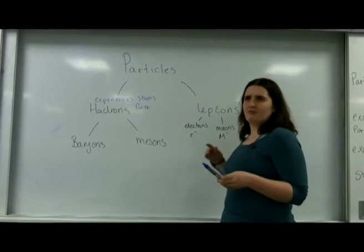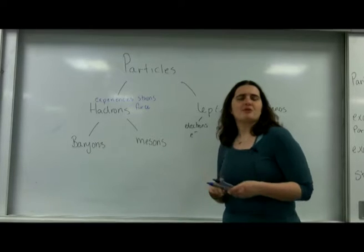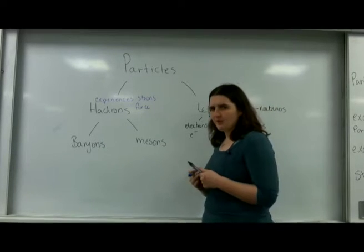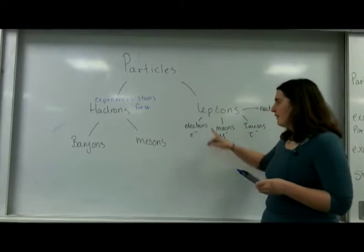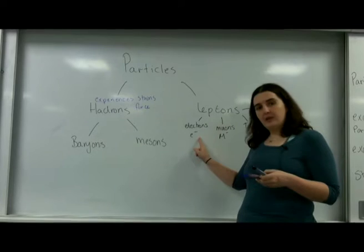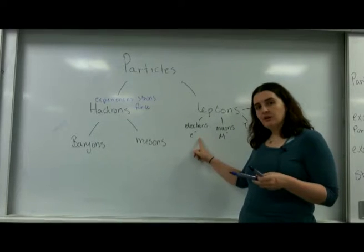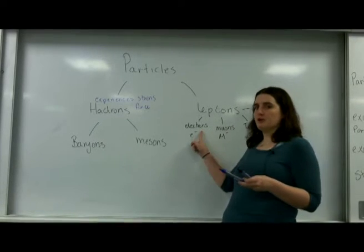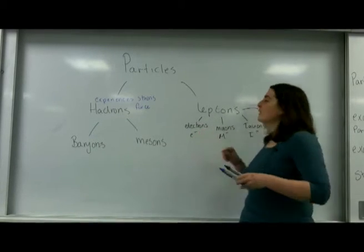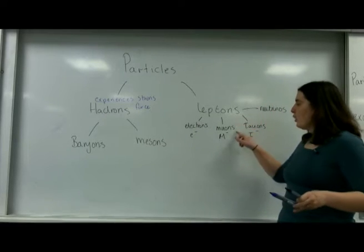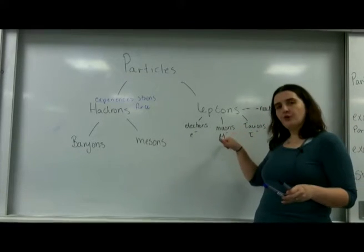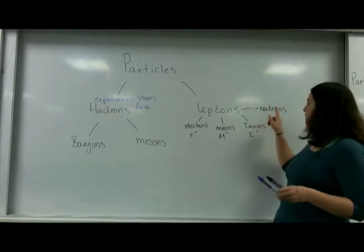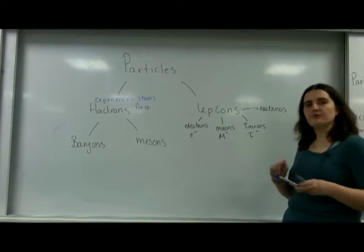Leptons are ones that don't experience the strong force, so they are found outside of the nucleus of the atom. They include electrons — the symbol for electrons is E minus. Note that minus charge. You also have muons (mu minus), tauons (tau minus), and neutrinos.